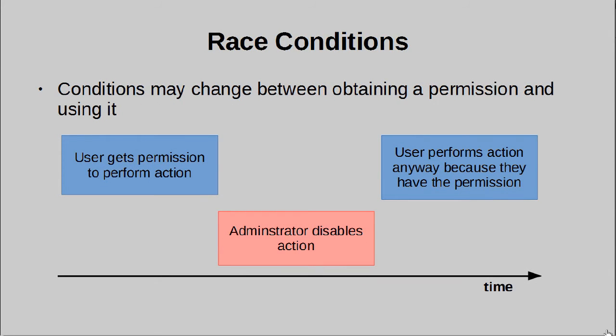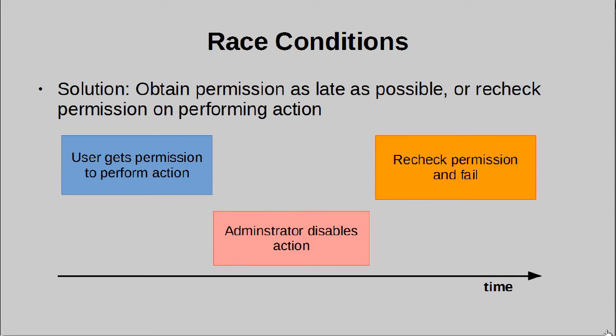Race conditions are an interesting one. Usually, a small period of time elapses between obtaining a permission and actually using it. If something crops up between these two points of time that invalidates the permission, would the user still be able to perform the action since they've already gotten permission for it beforehand? This is a hard one to tackle, but one good solution is to minimize the time between obtaining and using a permission, which reduces the chances of this happening.